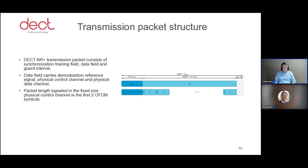Now going a little deeper on the physical layer details. The packets which are transmitted start with a synchronization training field, and in the data field you have control information and then the actual payload. The packet length and all parameters needed for demodulation are in a fixed-sized physical control channel, which is transmitted on the first two OFDM symbols.